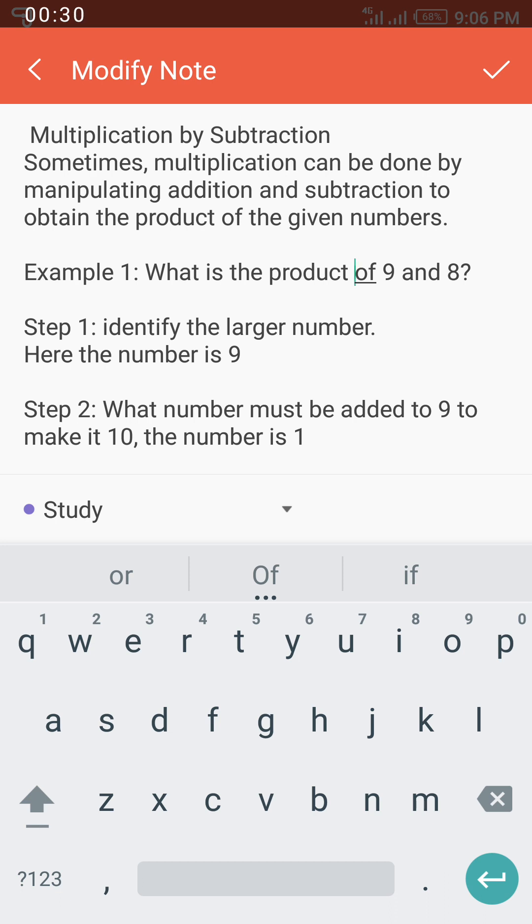Sometimes multiplication can be done by manipulating addition and subtraction to obtain the product of the given numbers. Now let's look at this example. Example 1: What is the product of 9 and 8? Step 1: Identify the larger number.